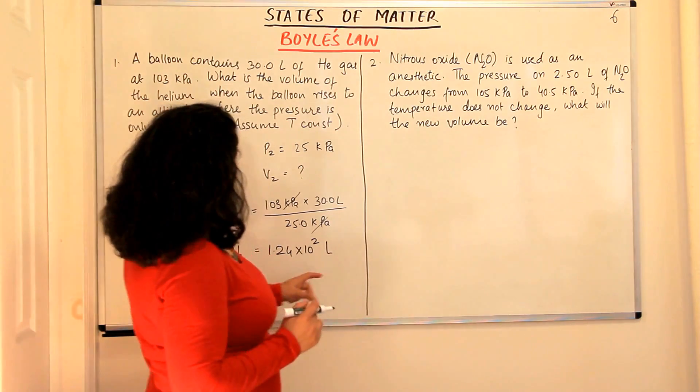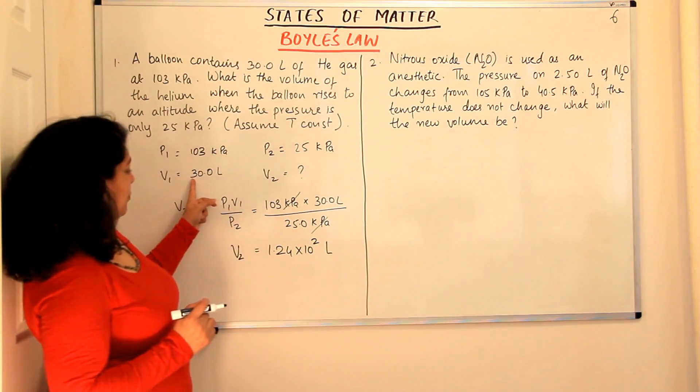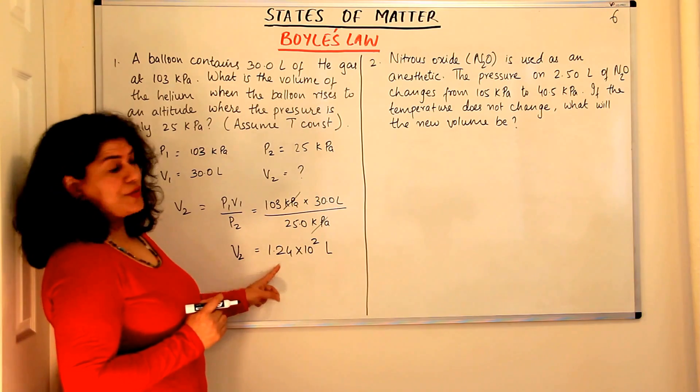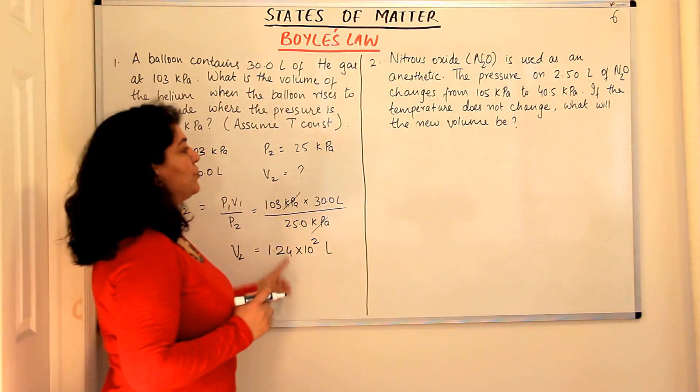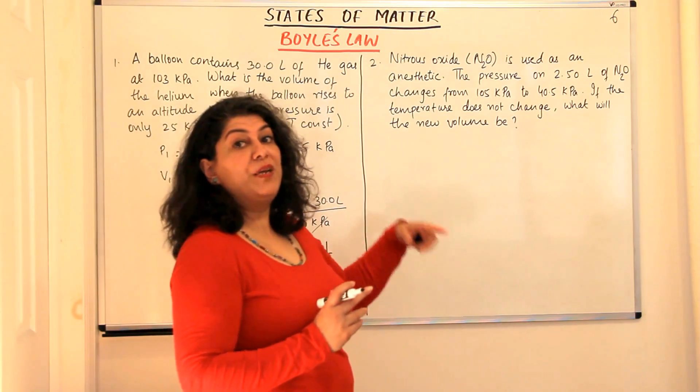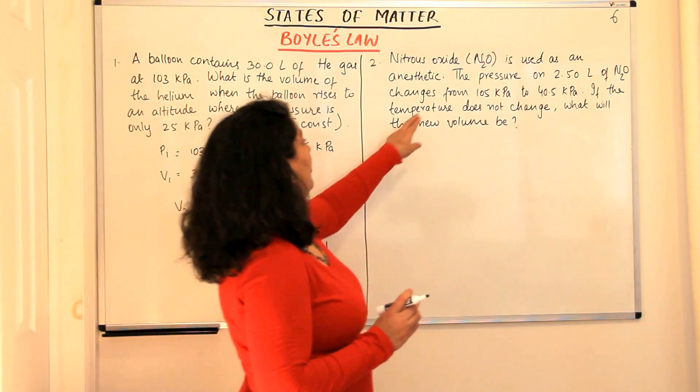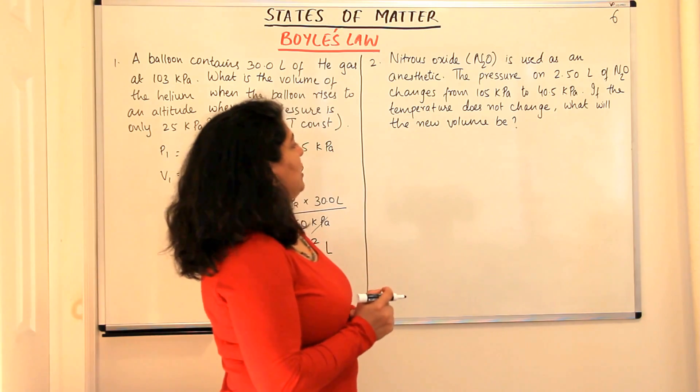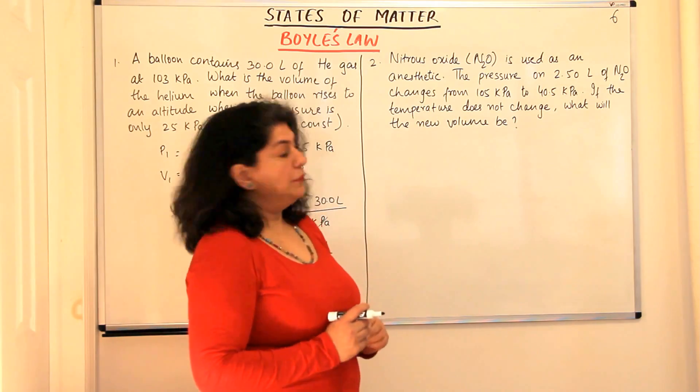You can notice here also the volume, it was only 30 litres and here it is 124 litres. So the volume has increased when the pressure decreased. That shows the inverse relationship between pressure and volume in Boyle's law. So if the temperature does not change, what will the new volume be?